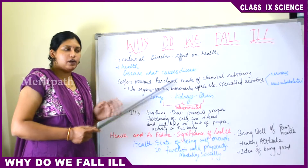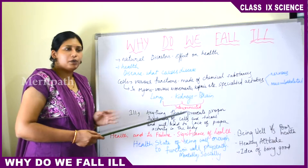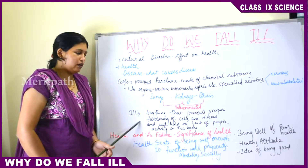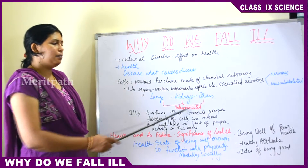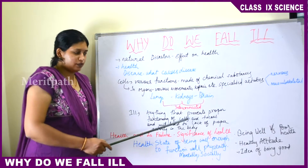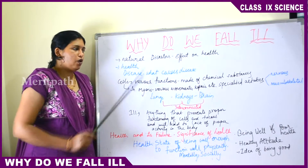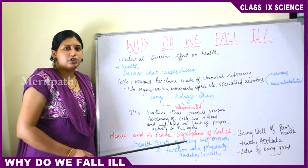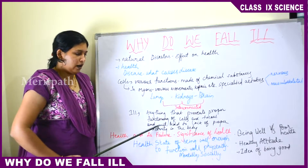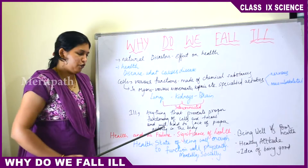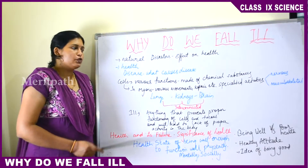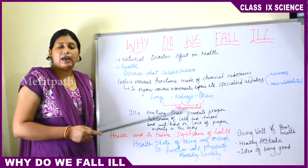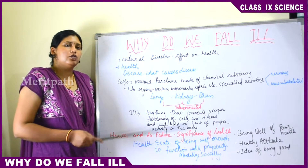If the organs don't function properly, you may fall ill. What is the meaning of falling ill? Falling ill means anything that prevents the proper functioning of the cells and tissues. All organs of the body are made up of cells and tissues, so anything that prevents their proper functioning leads to a lack of proper activity in the body. If any cell is damaged and does not function properly, the activity of that particular organ will also be impaired.